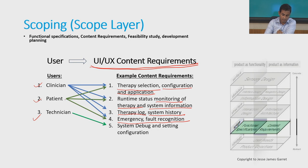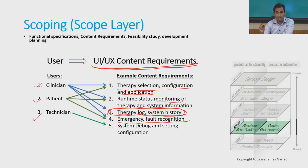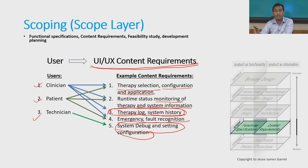For the patient, we have a similar set of requirements to those of the clinician, but without therapy log and system history, since that is not what the individual patient is interested in. It is very important that the patient also feels safe and is aware of the therapy status and the mode in which the system is running. The third user is a technician. For a technician, it is very important that he should be able to debug the system in case anything happens. The system should provide sufficient control for debugging and system configuration. This is part of the second layer of the Garrett model.